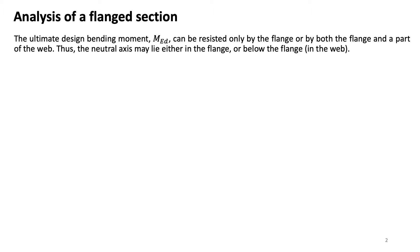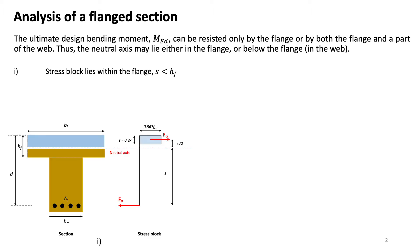It means that the neutral axis can either lie in the flange or in the web. In the first case where the stress block lies within the flange, S — the component of the stress block — will be smaller than HF, where HF is the thickness of the flange, BF is the width of the flange, D is the effective depth, AS is the area of steel reinforcement, and BW is the width of the web. The compressive forces will be carried by only the upper portion of concrete and the remaining part will work in tension.